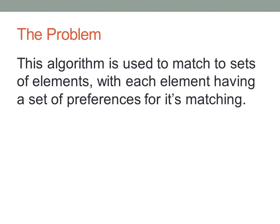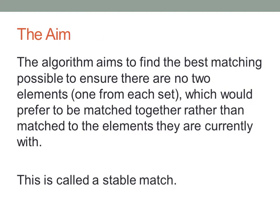The algorithm is used when there are two sets of elements which need to be matched and each element has a set of preferences for its matching. For example, when assigning children to a secondary school, each child gives a preference list of where they would like to go and each school would have a preference of the children they would like to admit. The algorithm aims to find the best matching possible to ensure that there are no two elements, one from each set, which would prefer to be matched together rather than matched to the elements they are currently with.